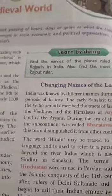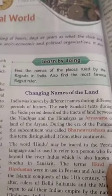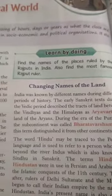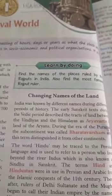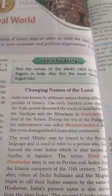Changing name of the land: India was known by different names during different periods of history. The early Sanskrit texts during the Vedic period describe the tract of land between the Vindhyas and the Himalayas as Aryavarth, or land of the Aryans. During the era of the Puranas, the subcontinent was called Bharatvarsha, and this term distinguished it from other continents.